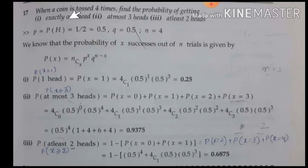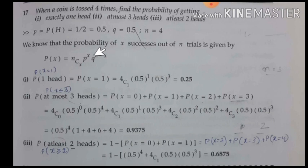For the first condition, we find the probability of getting exactly one head, that is P(X=1). Substitute X=1, N=4, P=0.5, Q=0.5 into the formula. You get 4C1 × 0.5^1 × 0.5^3. Using a calculator, the answer is 0.25.